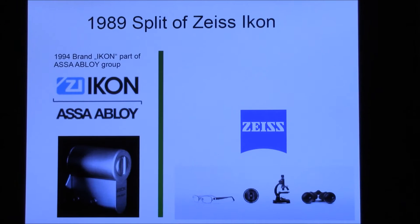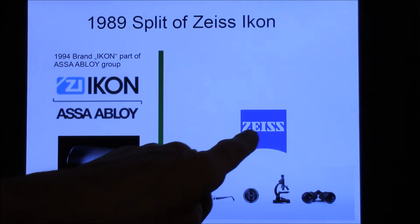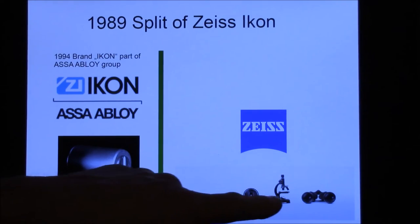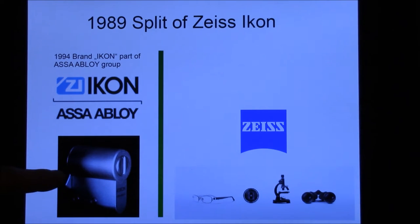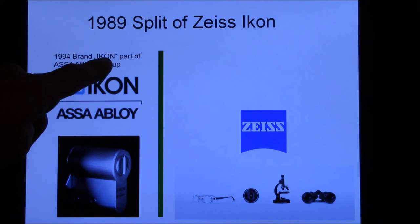But later on, in 1989, the Carl Zeiss Foundation split the two company parts. One is still named Zeiss and they are making optical instruments, while the other part related to locks and security aspects is named only Icon.